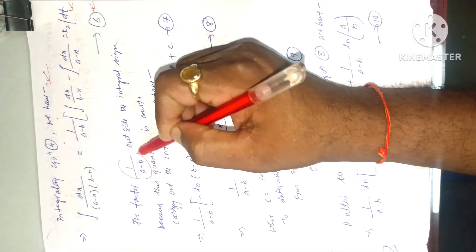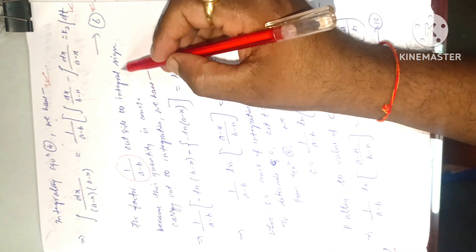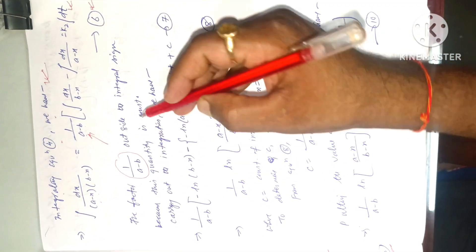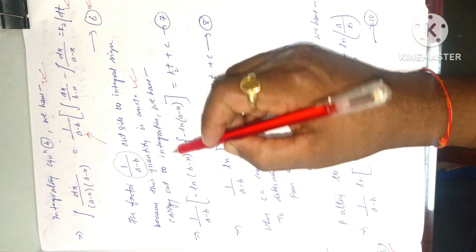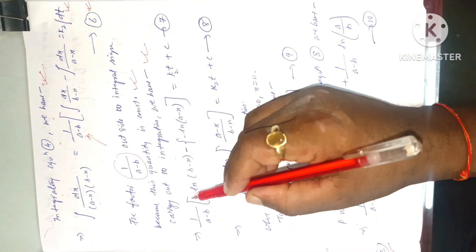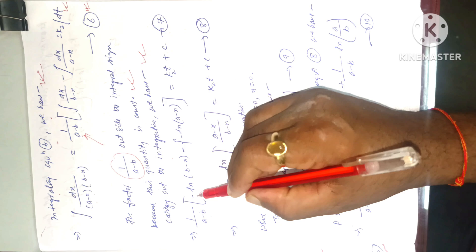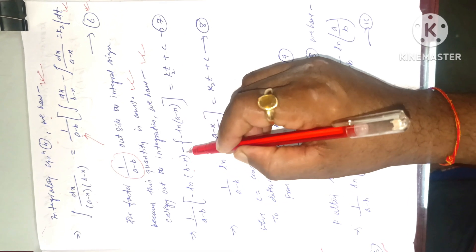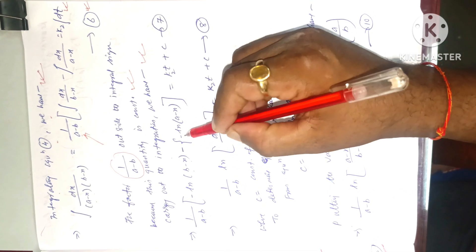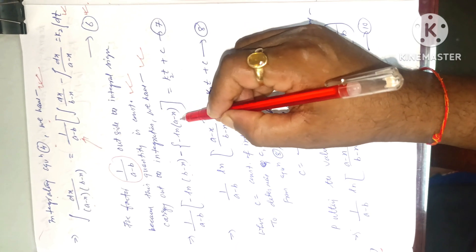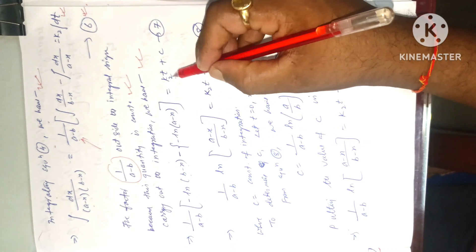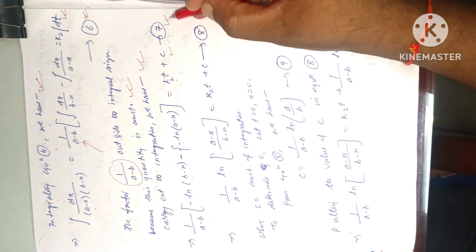The factor 1/(a − b) is taken outside the integral sign because this quantity is constant. Carrying out the integration, we have: 1/(a − b) × [−ln(b − x) − (−ln(a − x))] = k₂t + c, equation 7.